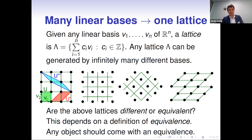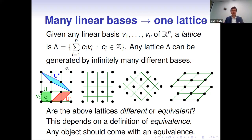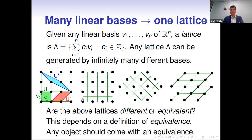Let me start from a simple example of a periodic lattice. A lattice is defined by a linear basis, which could be done in any high-dimensional space. We could take the standard basis of two vectors v1, v2 and generate an infinite collection of linear combinations with integer coefficients. However, we could generate exactly the same set of points using a different pair of vectors — for example, the red unit cell or a narrow blue cell — all generating the same square lattice.